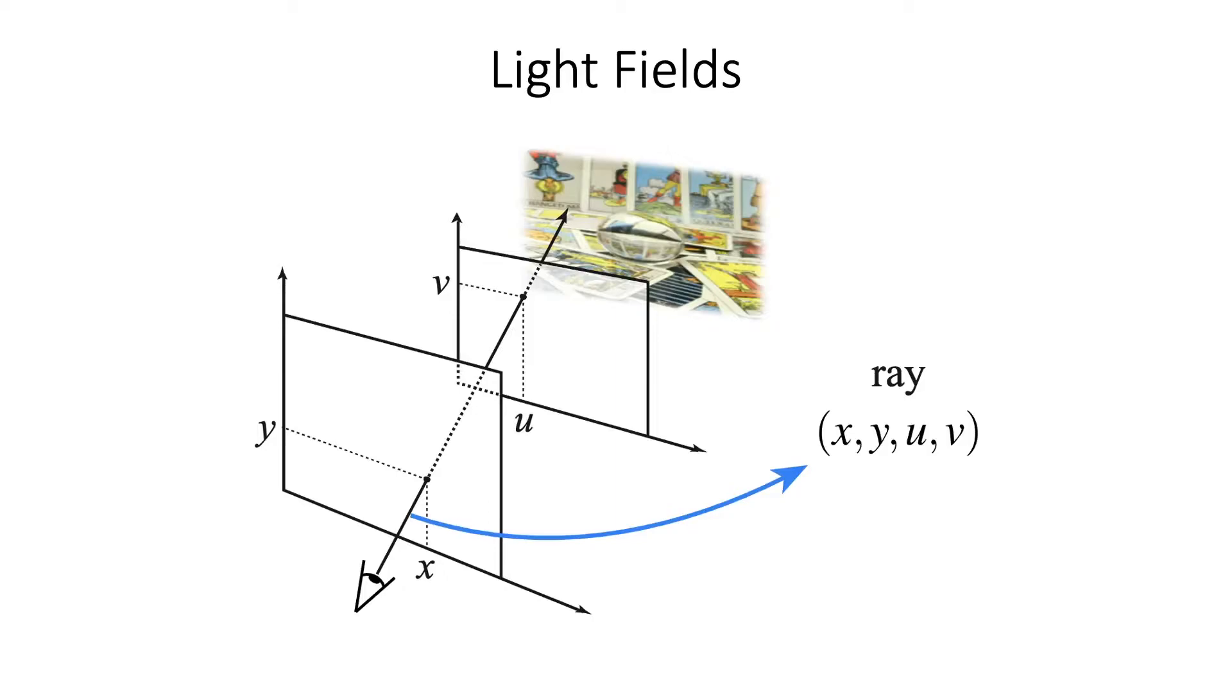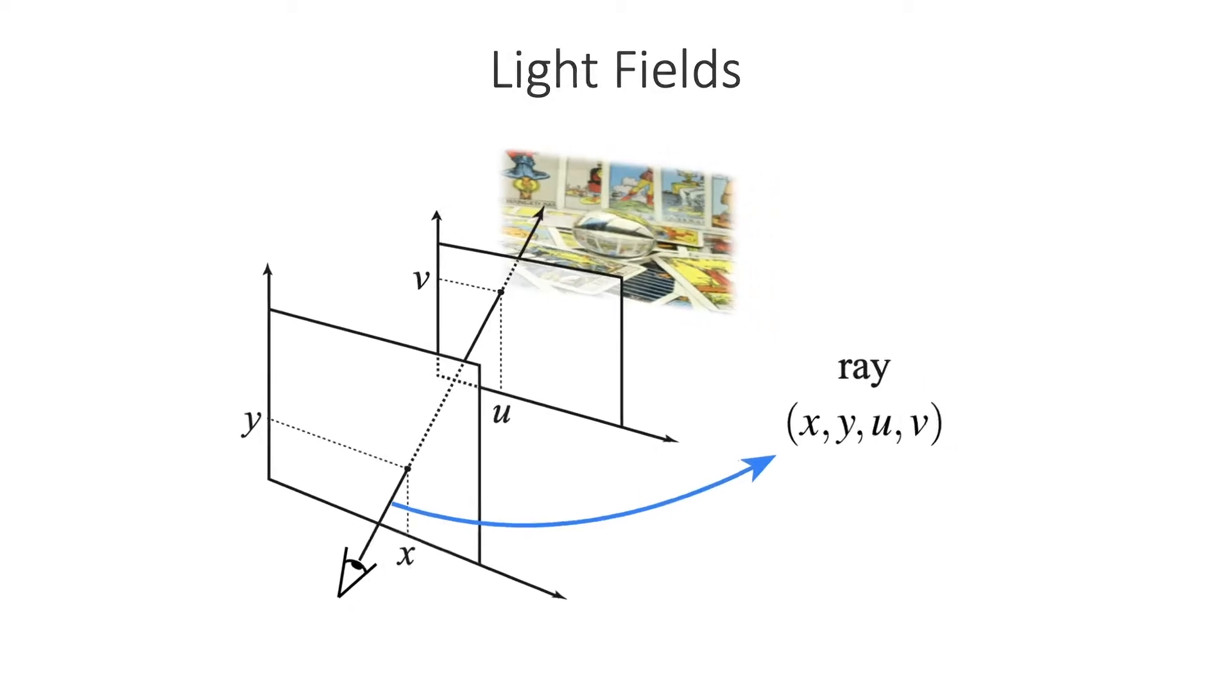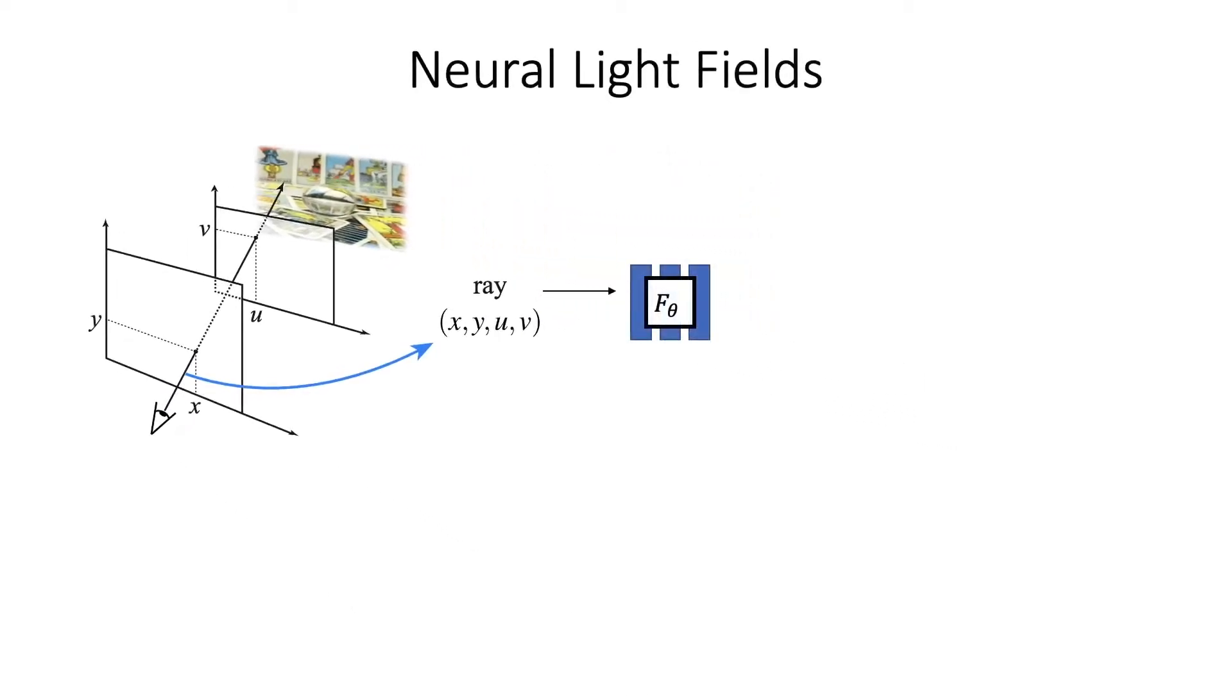On the other hand, a light field directly represents integrated radiance along rays. In order to speed up rendering for view synthesis, we could learn a neural light field representation which produces integrated radiance from ray parameters directly. Rendering from a neural light field would thus only require one evaluation of a neural network per ray.